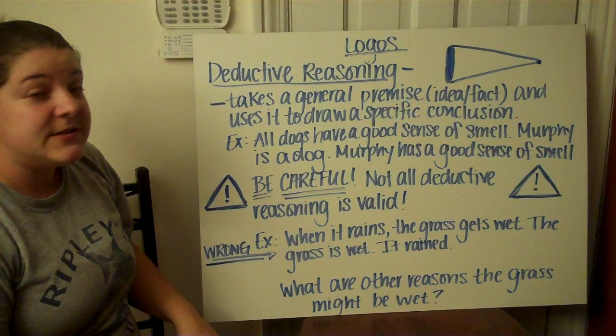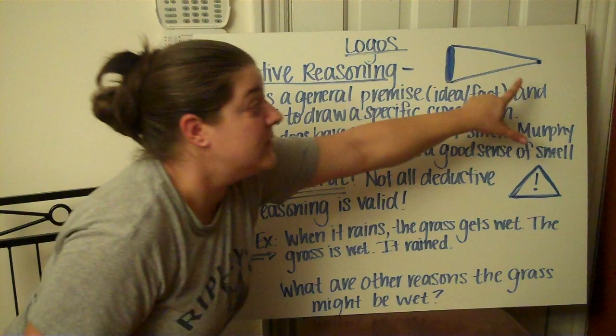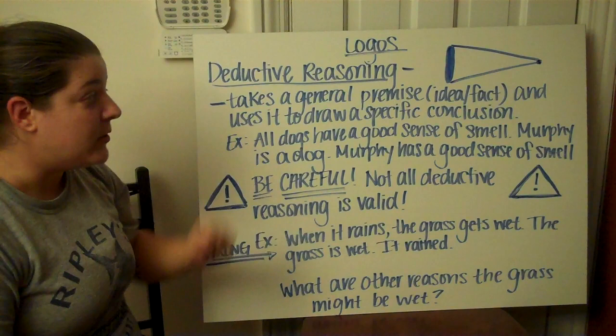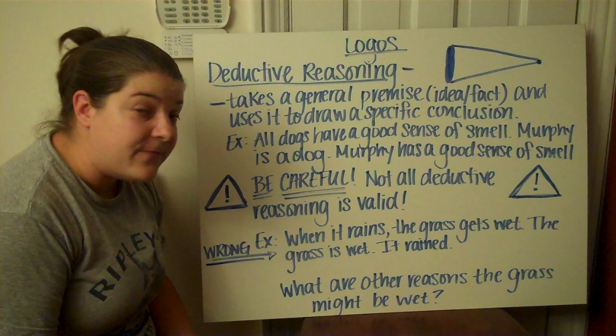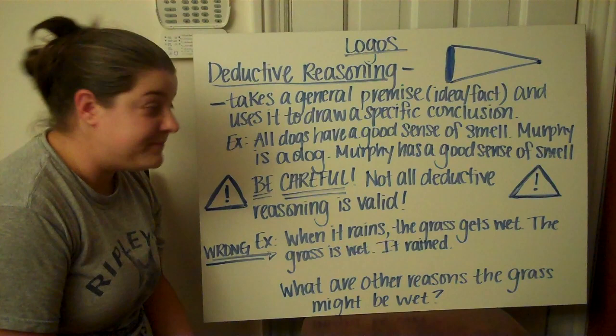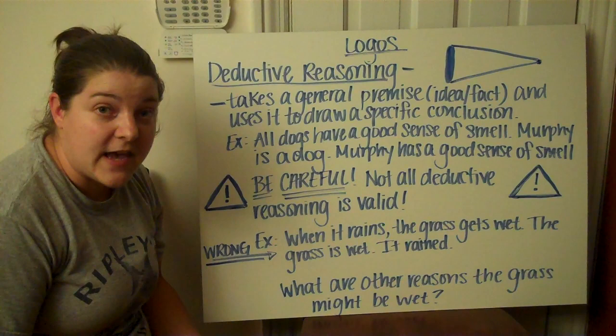Let's move forward into deductive reasoning. Again, deductive reasoning goes from a large concept or idea — a premise — to a specific application of that premise. It takes a general premise, which is an idea, a fact, a concept, and uses it to draw a specific conclusion. Here's an example: 'All dogs have a good sense of smell. Murphy is a dog. Murphy has a good sense of smell.' That's accurate.